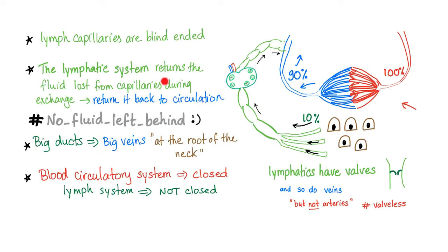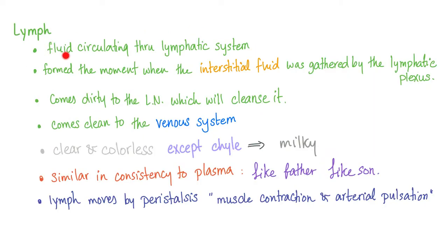The lymphatic system returns the fluid lost from capillaries during the exchange, returning it back to the veins. Lymph is the fluid circulating through the lymphatic system. It's formed when the interstitial fluid is gathered by the lymphatic plexus. It comes dirty to the lymph node — because it has pathogens, cellular debris, etc. — and the lymph node will cleanse it. It comes clean to the venous system.